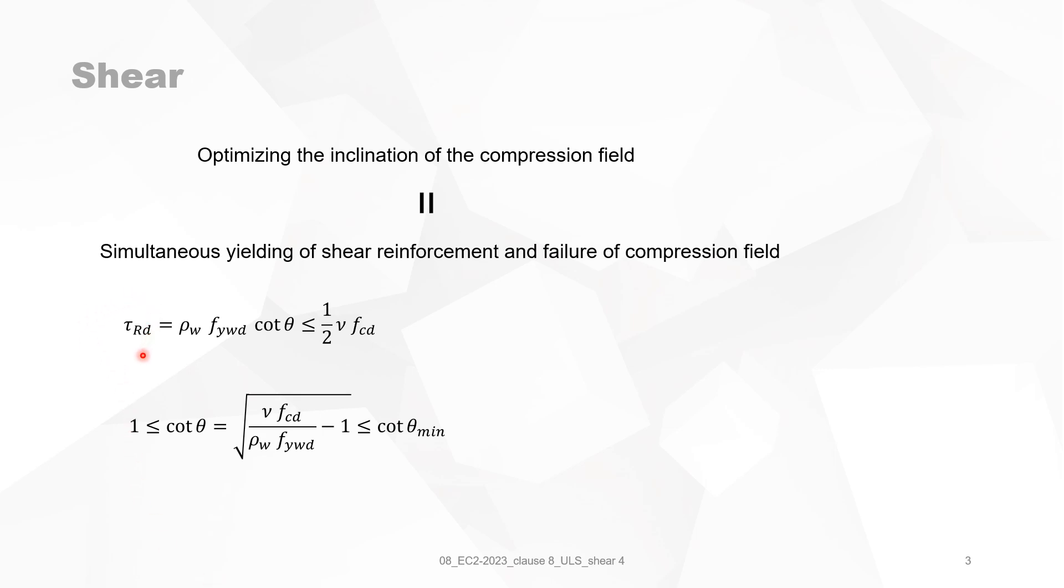Looking at the shear stress resistance, the design value of the shear stress resistance, then you can choose different angles theta, the angles of the compression field, and by changing this you can achieve an optimum. And this optimum angle is given by this formula which is stated here below. Of course the cotangent theta of this optimum angle must be between 1 and the cotangent theta min, the minimum value of cotangent theta.